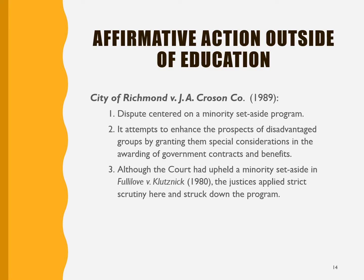Although our discussion of affirmative action is often synonymous with the area of education, there are many other types of affirmative action programs evaluated by the Supreme Court. Richmond versus Croson in 1989 was a case that involved a minority set-aside program for government hiring or contracting. It intended to enhance the prospects of disadvantaged groups by granting them special consideration in awarding government contracts. Although the court had previously upheld set-aside programs, the justices applied a strict scrutiny standard and struck down the minority set-aside program that Richmond had.